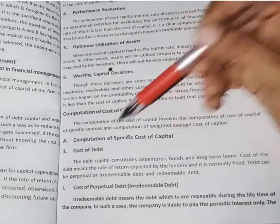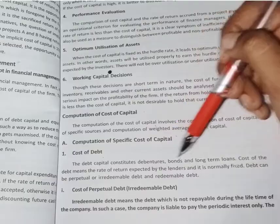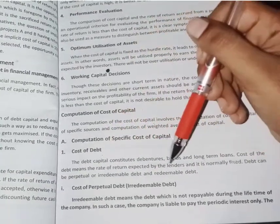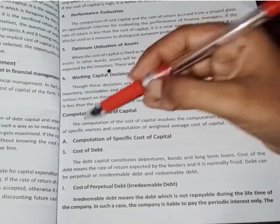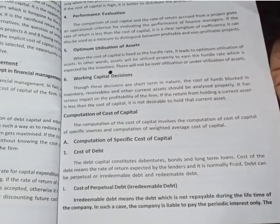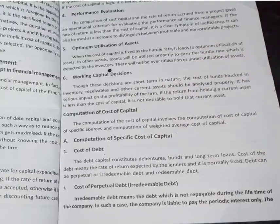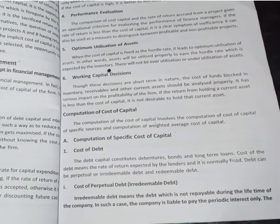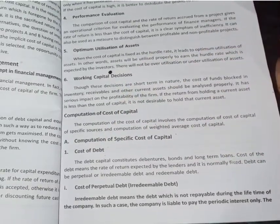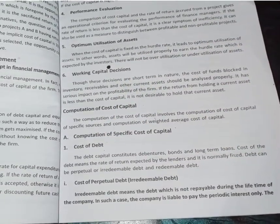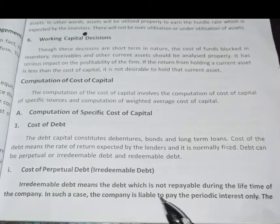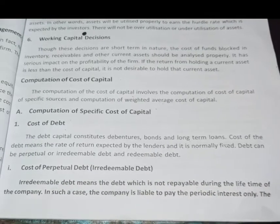The cost of debt means the rate of return expected by the lender, and it is normally fixed. Debt can be perpetual or redeemable. The cost of debt means the interest. Perpetual debt is the debt which is not repayable during the lifetime of the company.